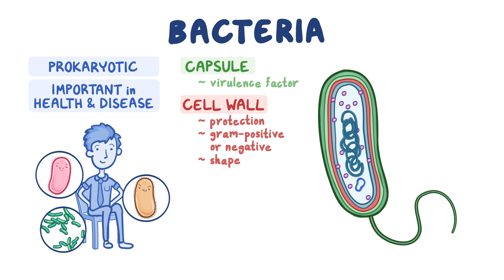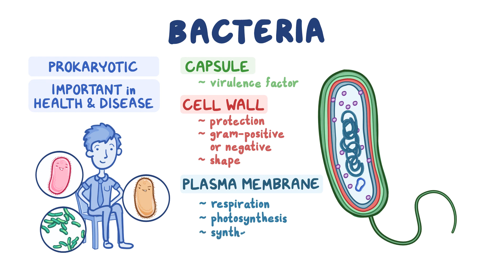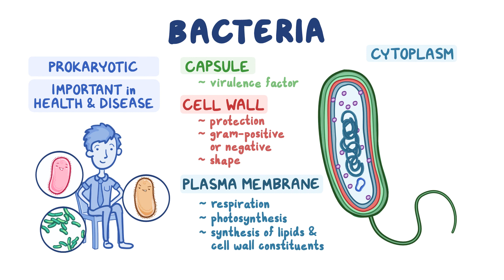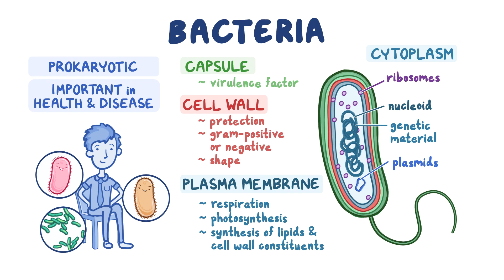Underneath the cell wall is the plasma membrane, which is the most important layer because it encloses the cytoplasm and defines the cell, having important roles such as respiration, photosynthesis, and the synthesis of lipids and cell wall constituents. The cytoplasm contains ribosomes, which are the site of protein synthesis; the nucleoid, which contains the genetic material; and plasmids, which contain genes that confer a selective advantage to the bacterium.